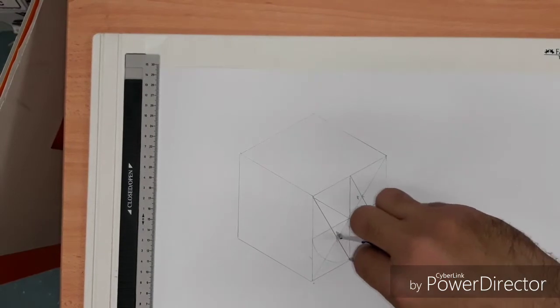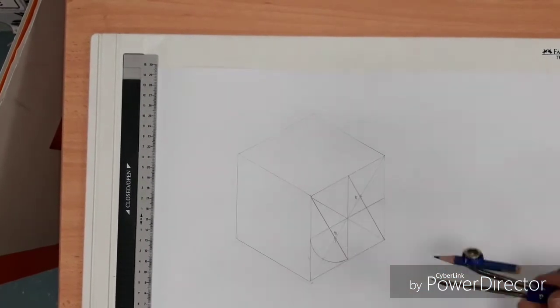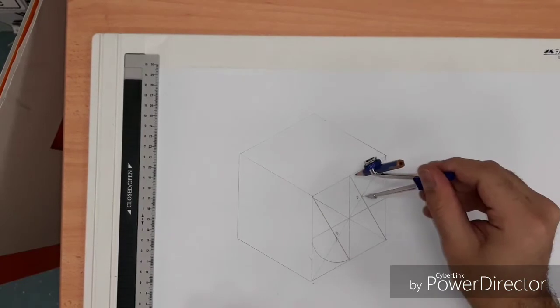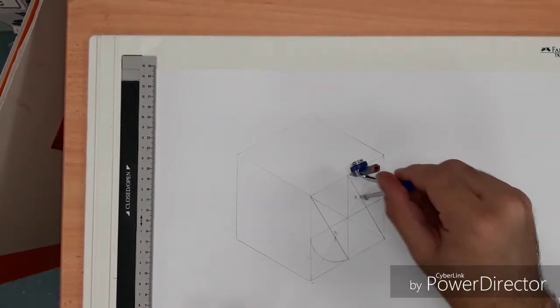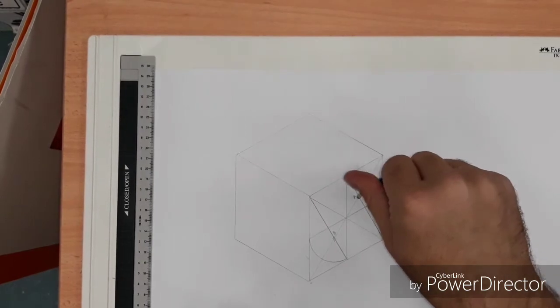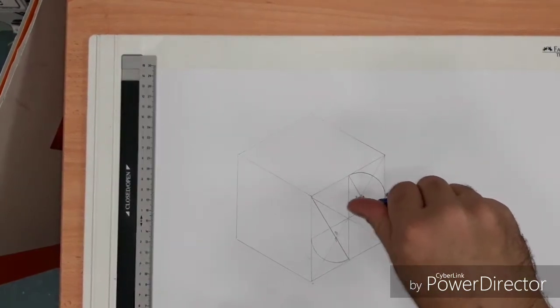So I draw my arc from point to point. That's at point B. Now point A is exactly the same. You shouldn't need to resize your compass.